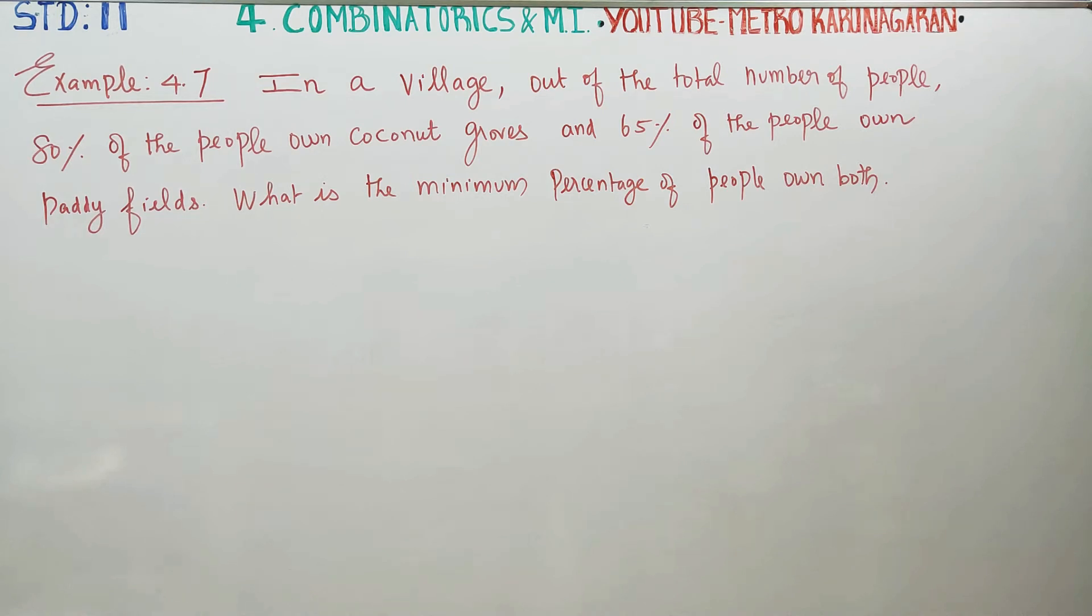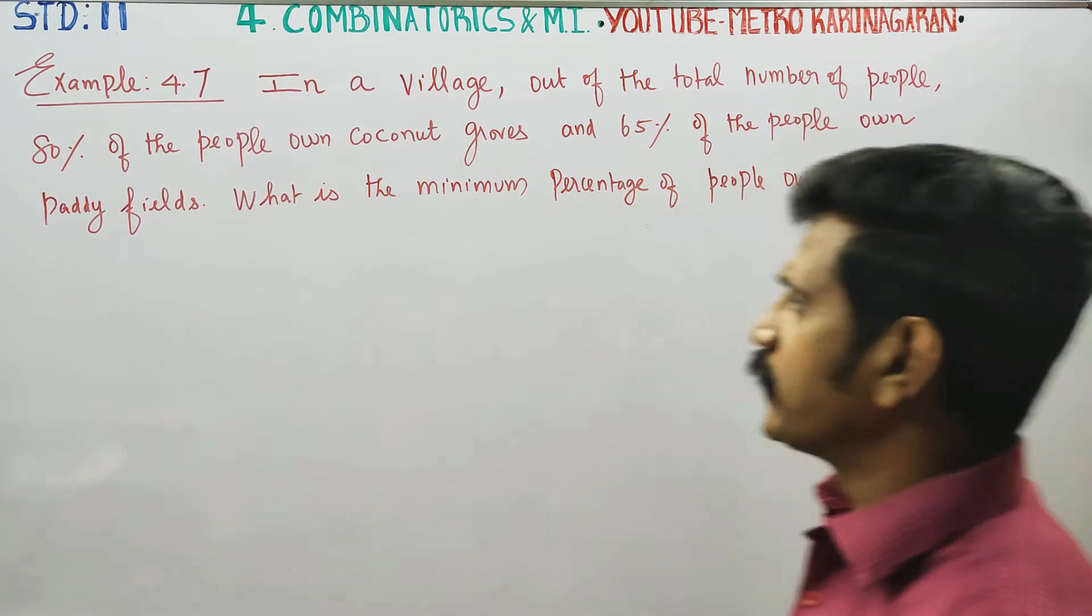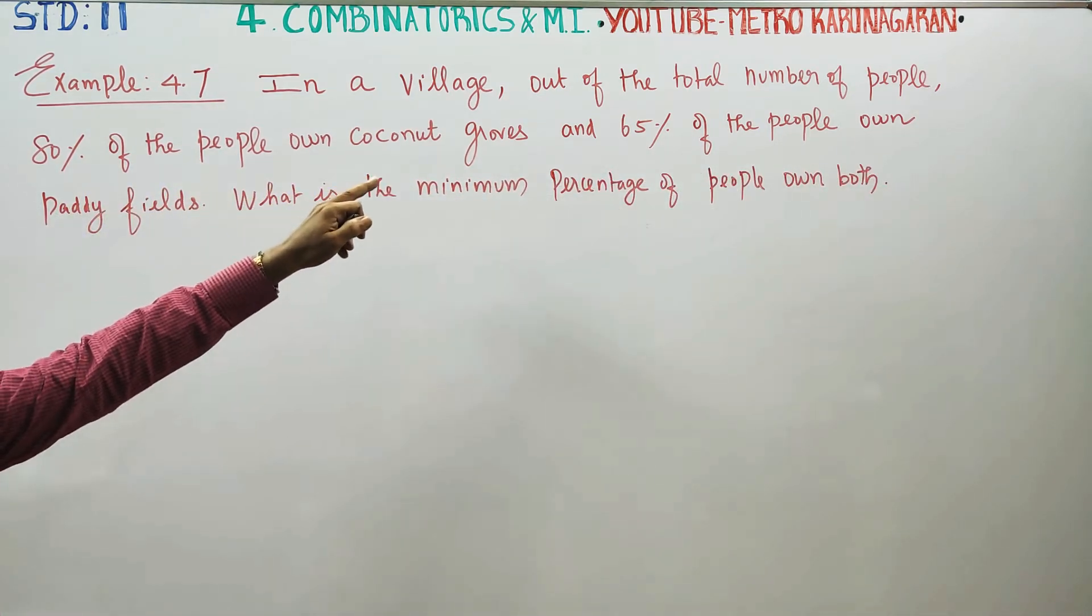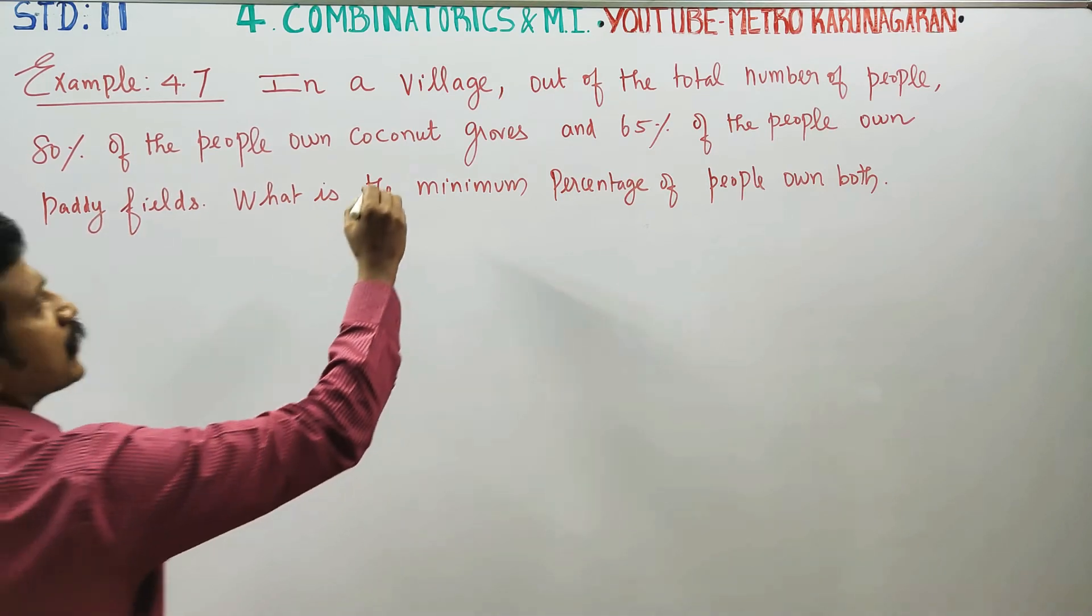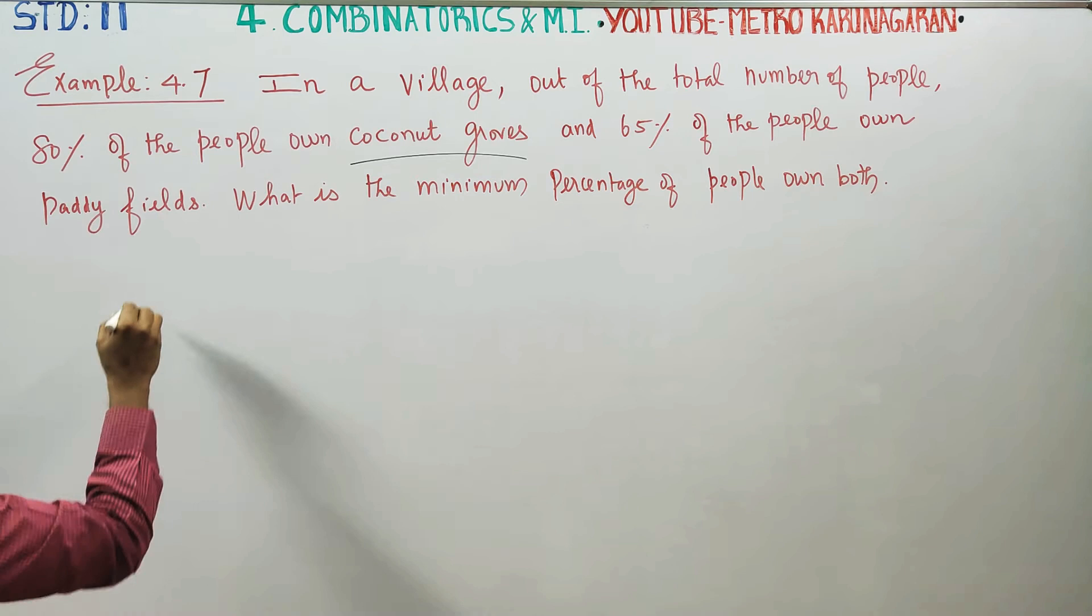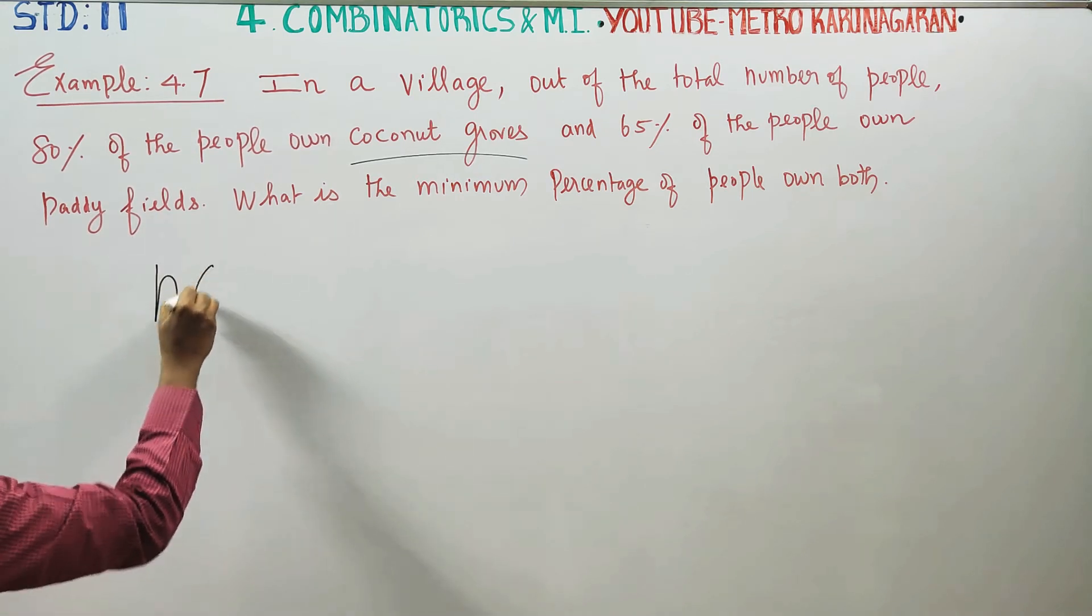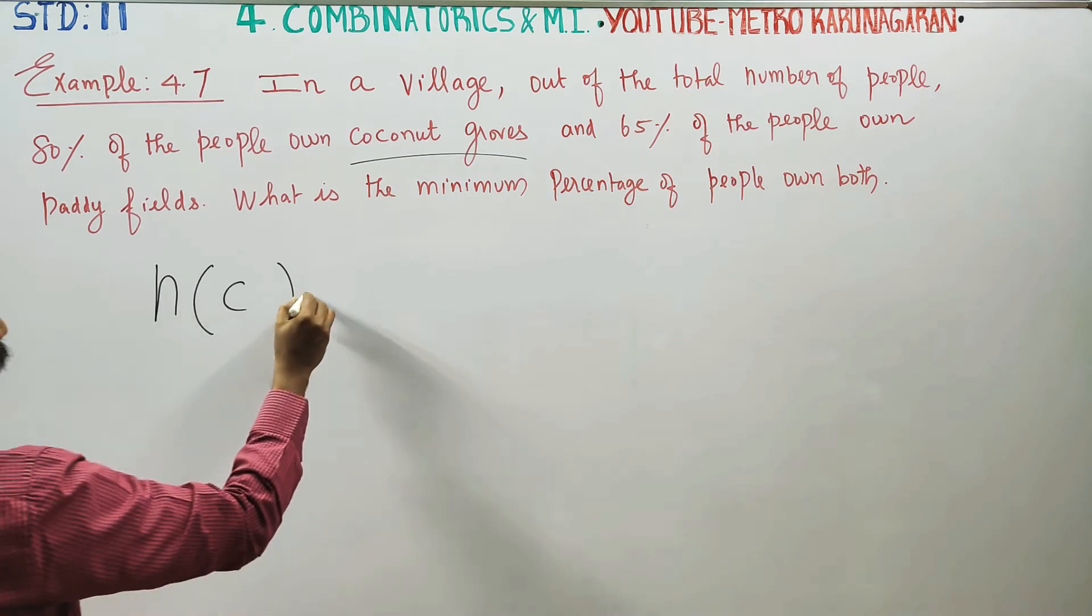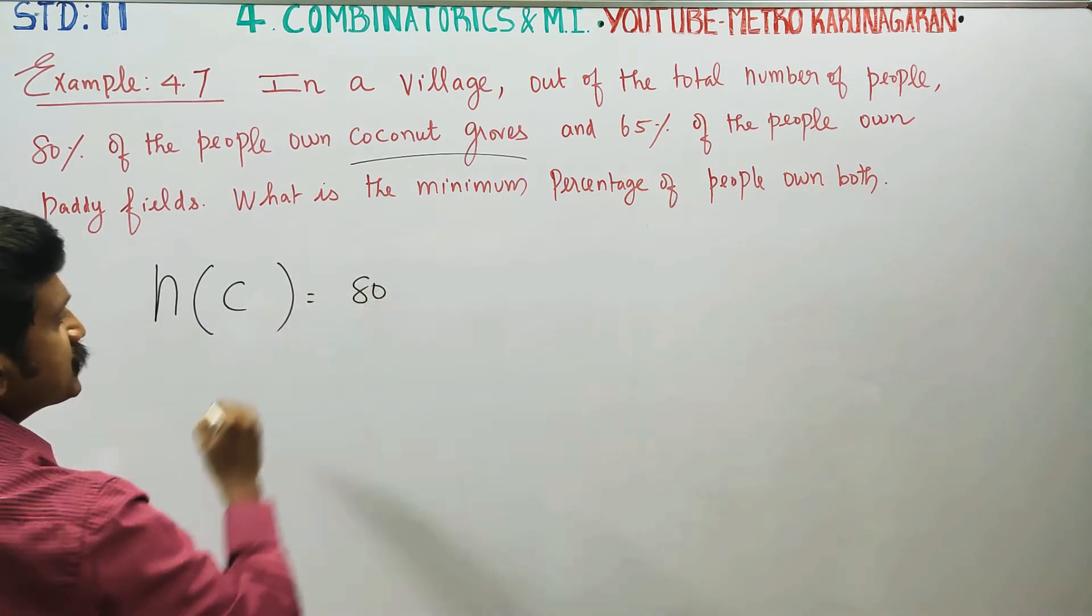Dear Leaven standard students, in a village, out of the total number of people, 80% of the people own coconut groves. If you have 80% of people having coconut groves, n(c) is equal to 80% of people out of 100.